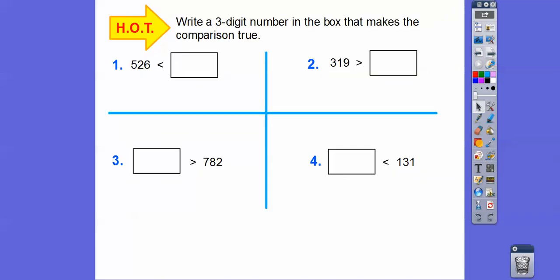So write a three-digit number in the box that makes the comparison true. So we can put in any number, there's infinite numbers that we can put into here that's bigger. We want a bigger number than 526. So I did a real obvious one. You can do any number, but 526 is less than 639. All three of these digits are greater than all three of these digits. 319 is going to be greater than, now we've just got to do a number that's smaller than 319, like 309. Threes are matching up, so we look at the next one. One is greater than zero, so that means 319 is greater than 309.